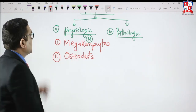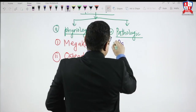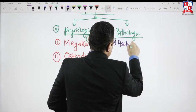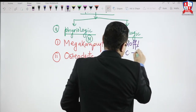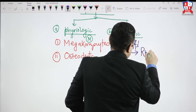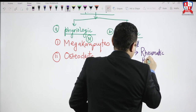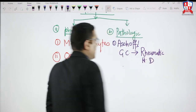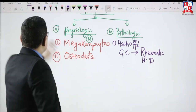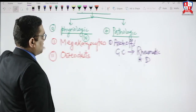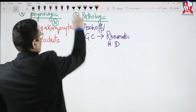Pathologic giant cells — there are numerous examples. For example, Aschoff giant cells. Aschoff giant cells are seen in rheumatic heart disease. This is an important point: Aschoff giant cells are diagnostic of rheumatic heart disease. This is one pathological giant cell to remember.